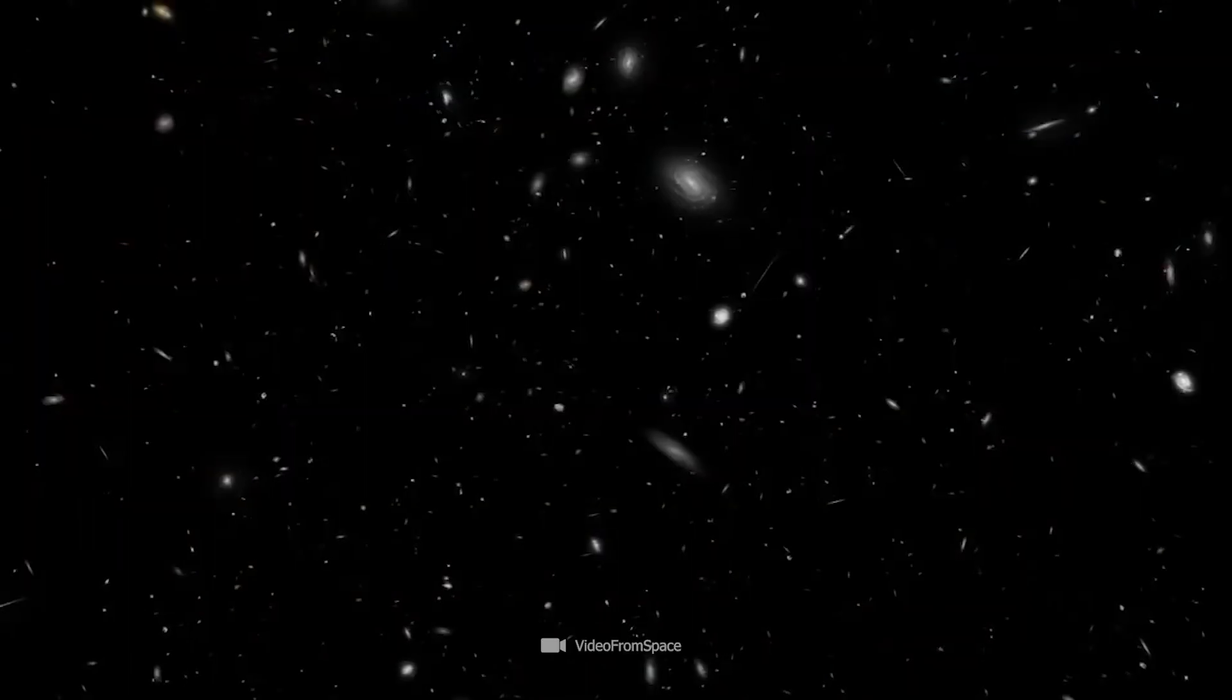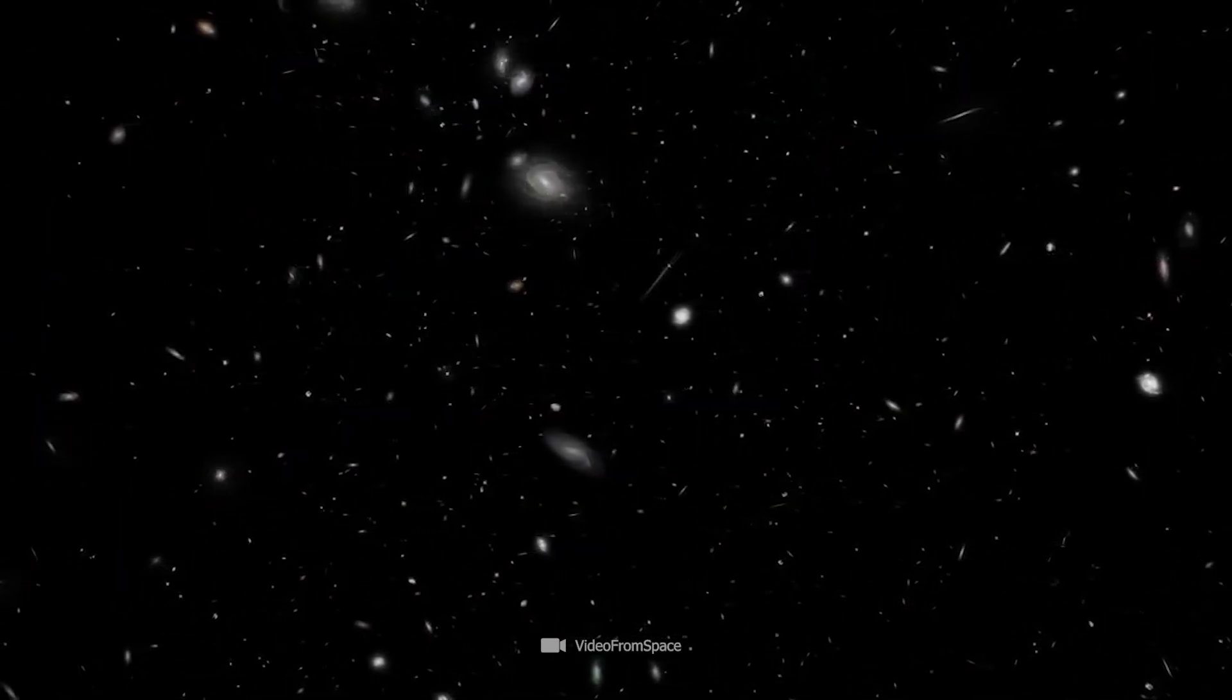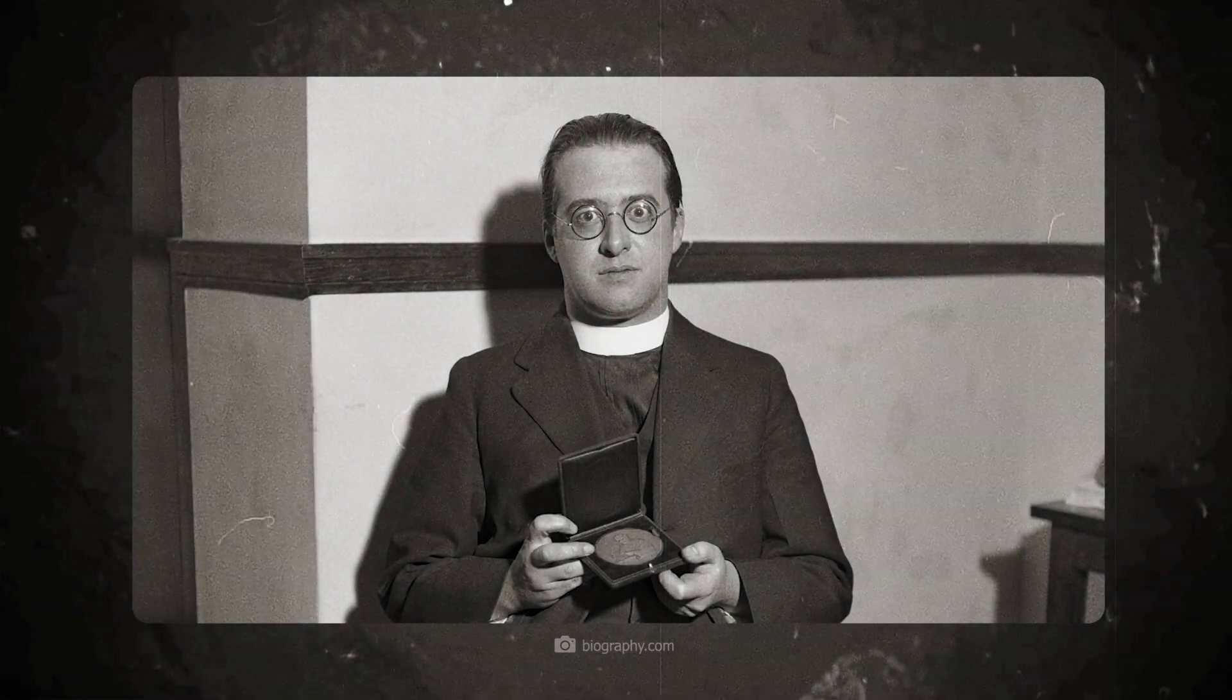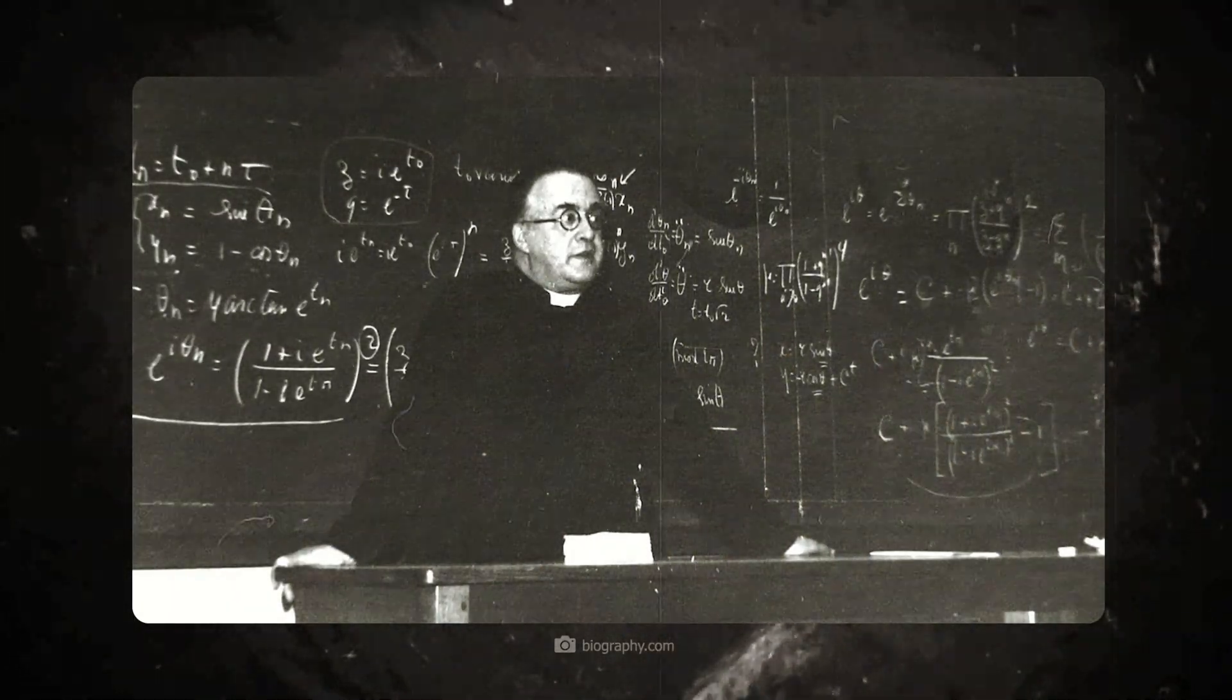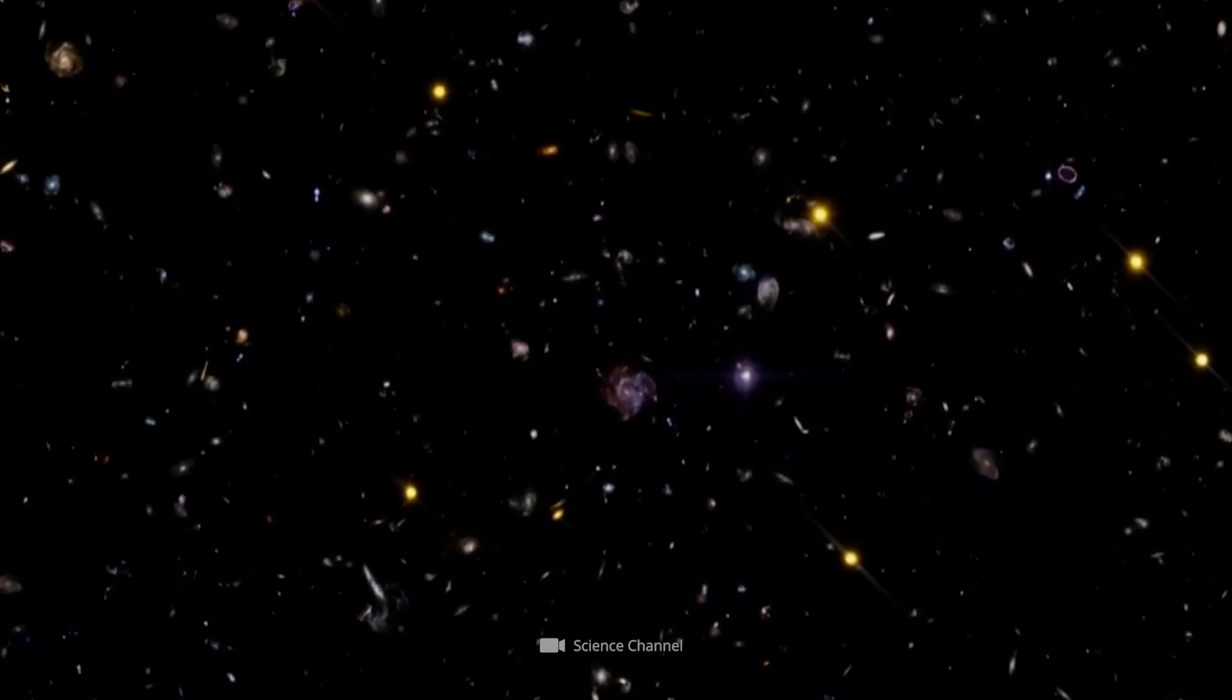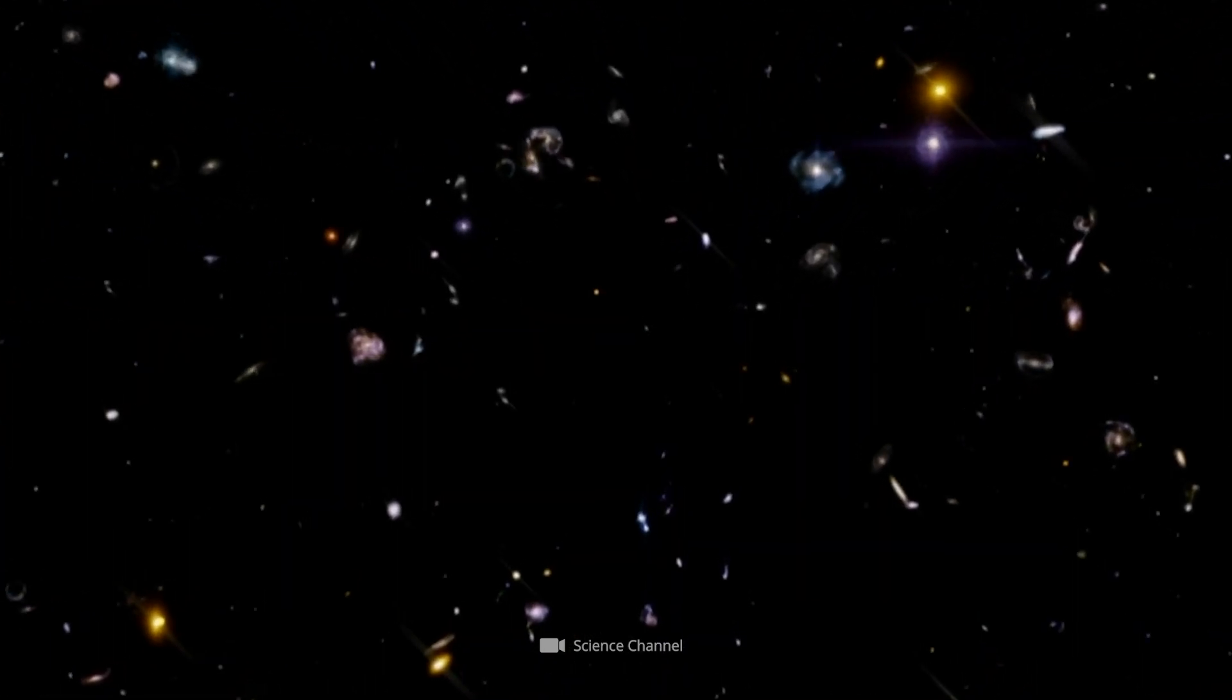And thus the Hubble Constant and subsequently the idea of an expanding universe were born. The Belgian physicist George Lemaitre then came up with the idea that the universe started from a single point and the theory of the Big Bang was only a few steps away. The expansion rate of the universe therefore shows how quickly galaxies are moving away from each other.